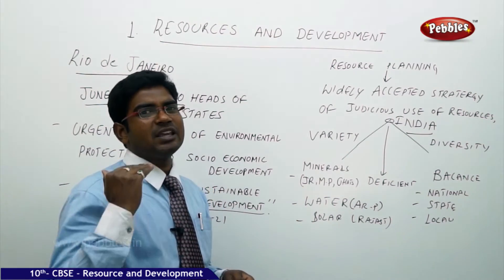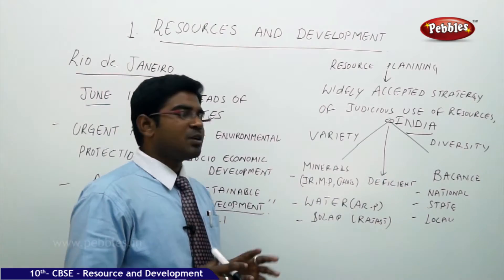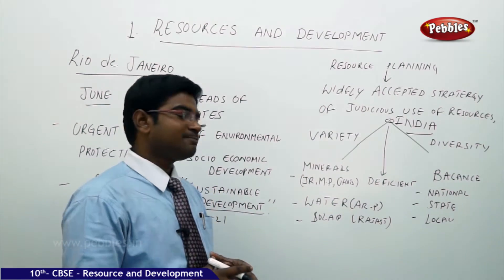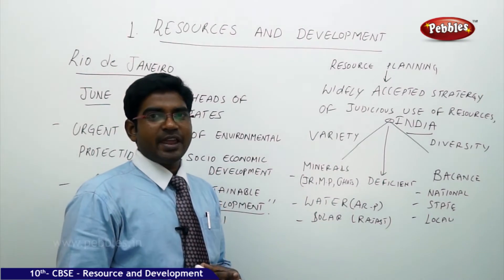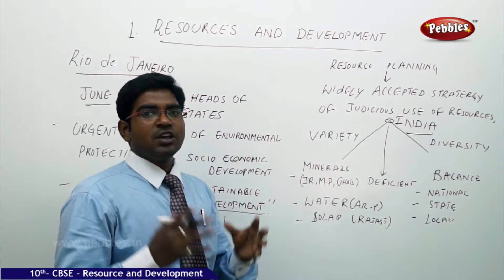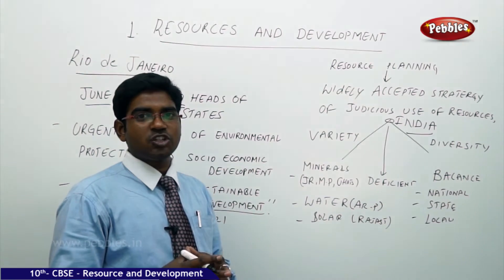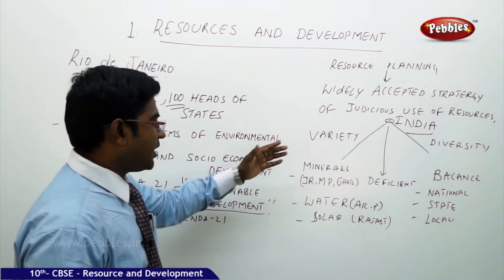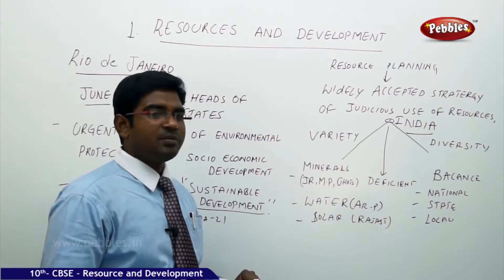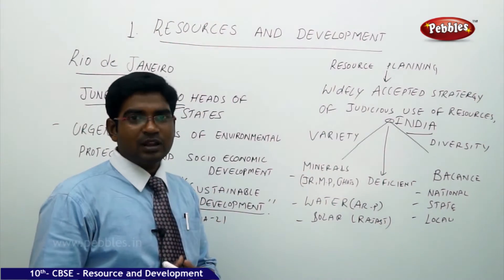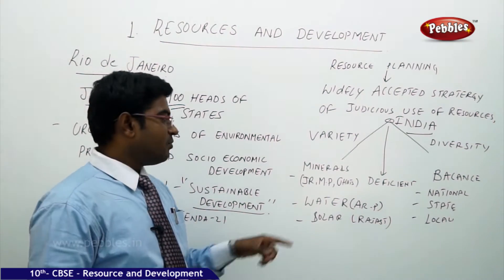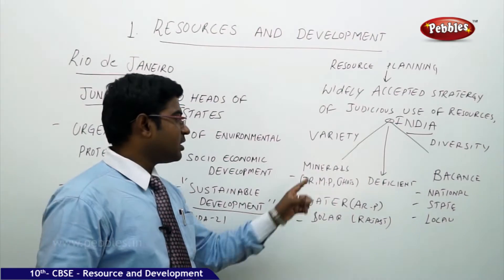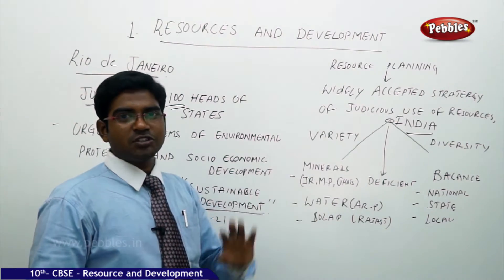Water is abundantly found, causing floods in Arunachal Pradesh, where the flow of the Brahmaputra brings abundant availability of water. Rajasthan, the state of desert, has huge availability of solar energy, though its potential has not been fully recognized. Minerals are not available in Rajasthan or Arunachal Pradesh, water is not available in Rajasthan, and solar energy is not available in Jharkhand, Madhya Pradesh, or Chhattisgarh.